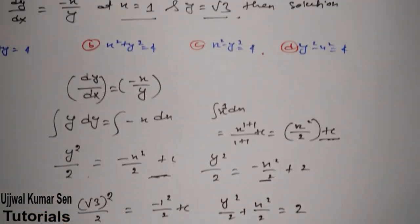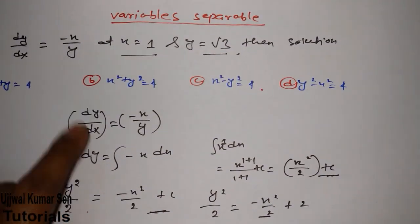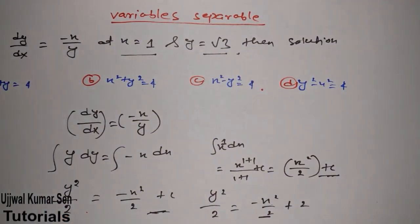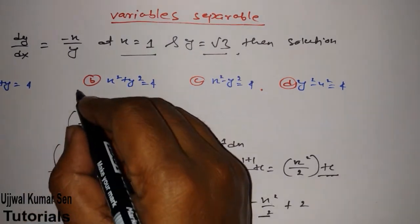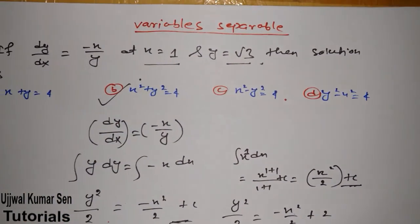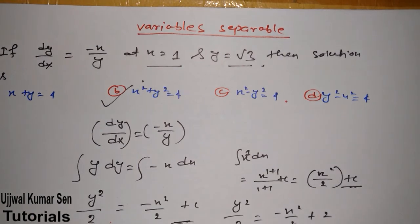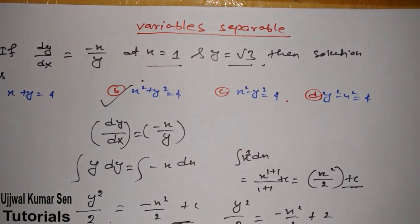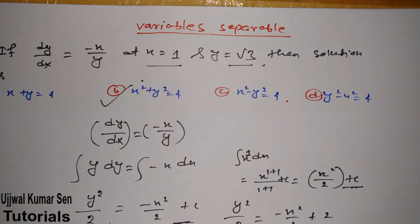So y² + x² = 4 — match this with the answer options. Option B is the right answer for this question, and this same question was asked in GATE previous year. It took only two to three minutes to solve, and once you become familiar with variable separable problems, you can easily solve any question related to it.